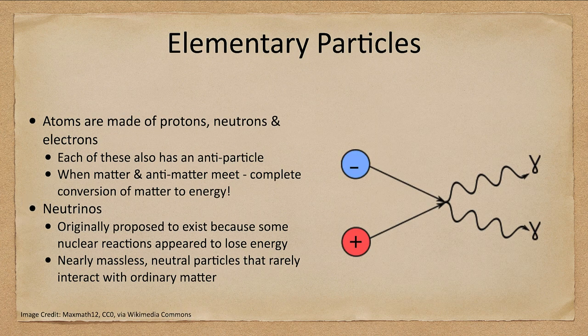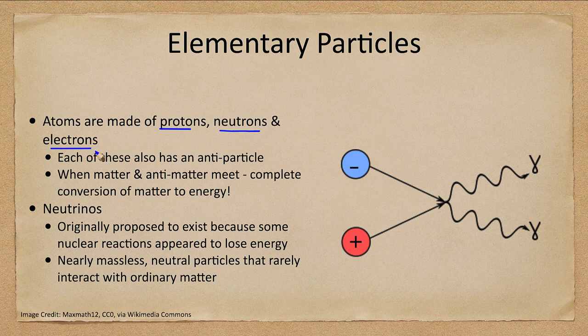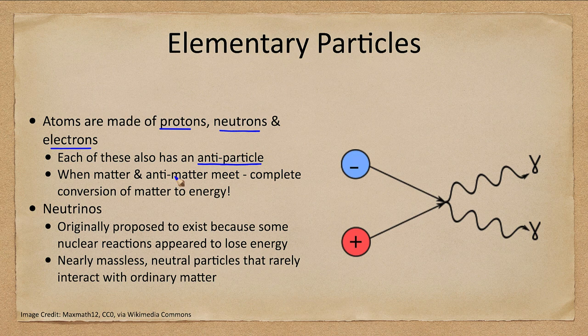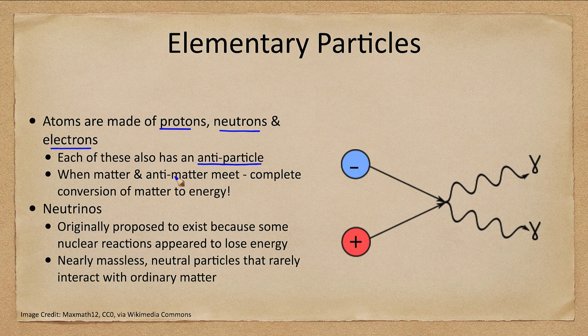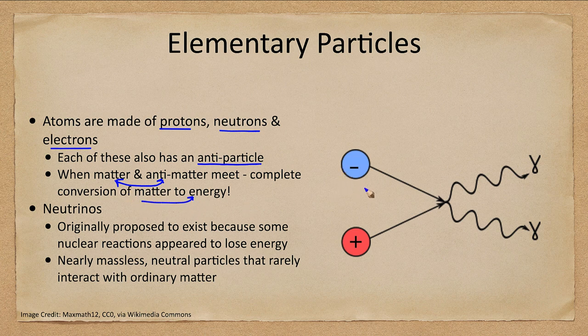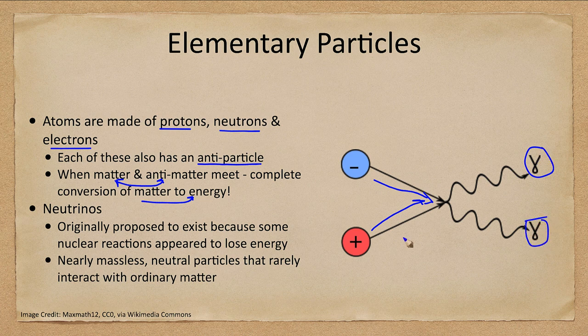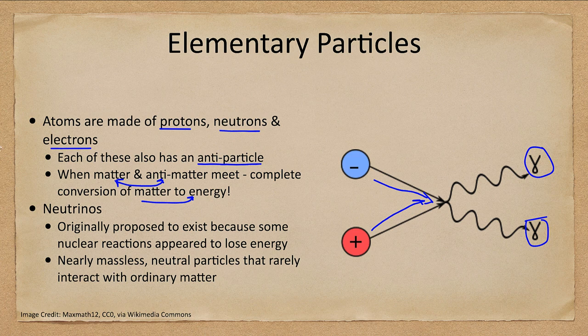To do that, we have to think about elementary particles. We have protons, neutrons, and electrons. That's what atoms are made up of. Each of these also has an antiparticle: antiprotons, antineutrons, and antielectrons. Antielectrons are actually known as positrons. They are exactly the same as electrons, except they have the opposite charge. When matter and antimatter meet, that is a complete conversion of matter to energy. You can take a particle and its antiparticle, they collide, and you get a couple of gamma rays. Two photons of energy, extremely high energy photons, that will then travel outward. So the mass is gone, completely converted into energy.